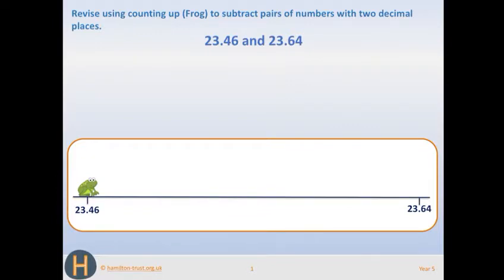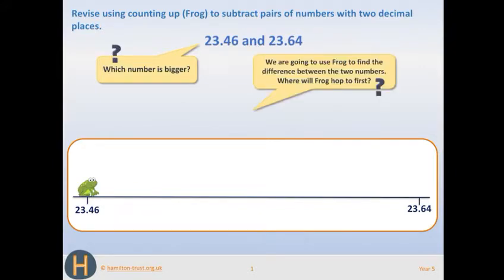We've been given 23.46 and 23.64. We're going to count up from the subtrahend to the minuend, so we're going to count up from the number that we're subtracting to the number that we're subtracting from. We'll use the frog method. It's called the frog method because it hops to find the difference between the two numbers.